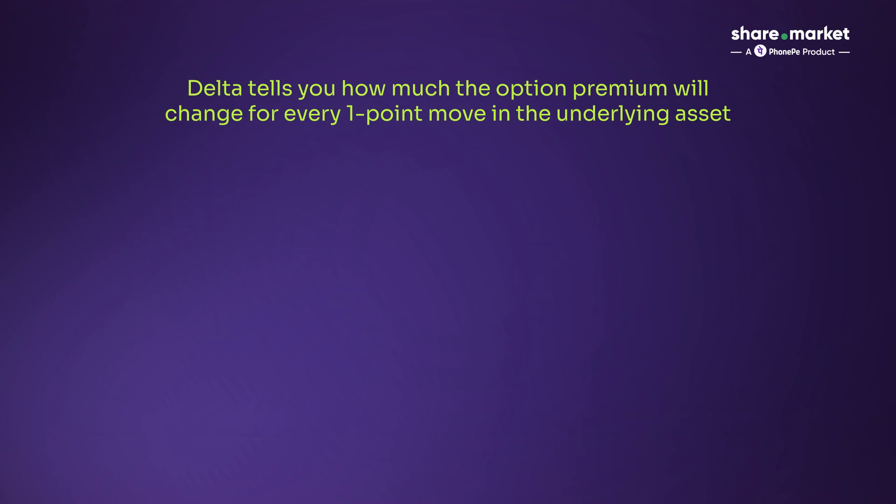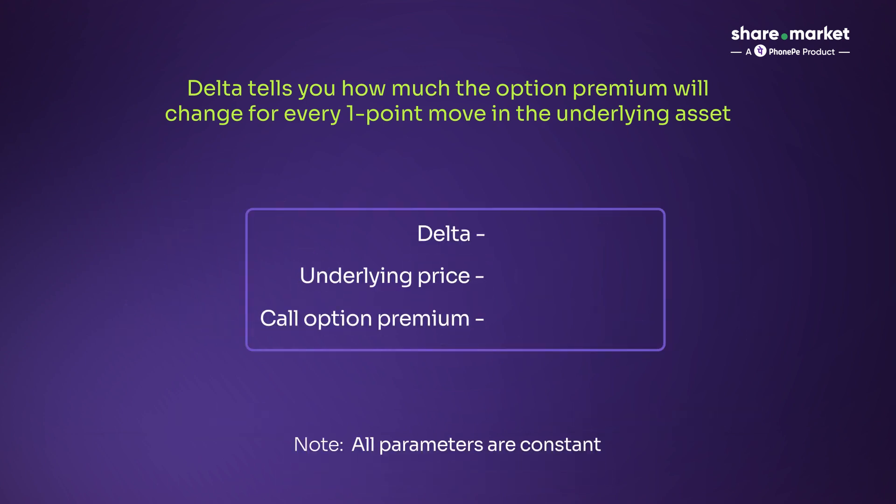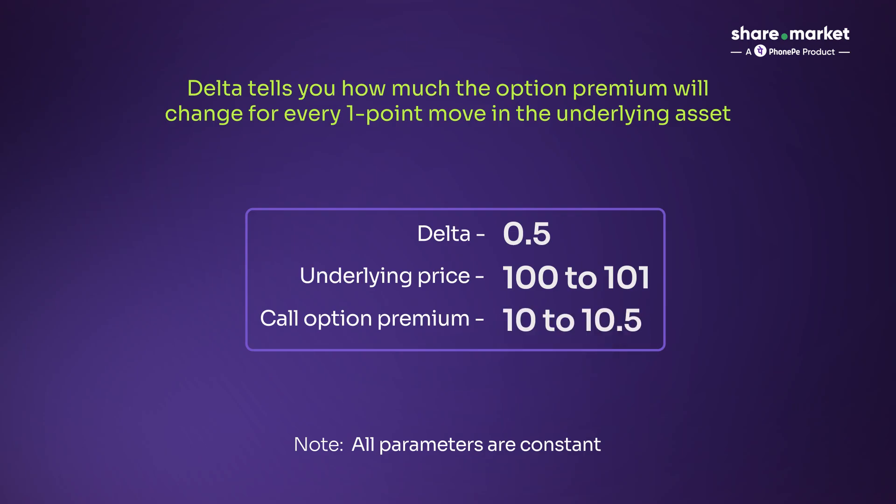Delta tells you how much the option premium will change for every one point move in the underlying asset. For example, if a call option has a delta of 0.5, then every one point move in the underlying will move the option premium by 0.5. Delta is important because it helps you instantly estimate the profit or loss you will make based on market movement. It's also the foundation of hedging and strategy building. Traders often deploy delta-neutral strategies or rebalance positions based on delta.